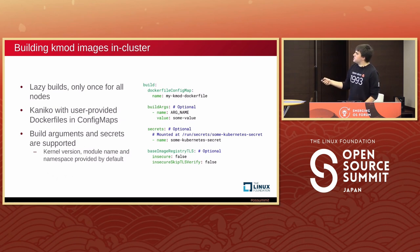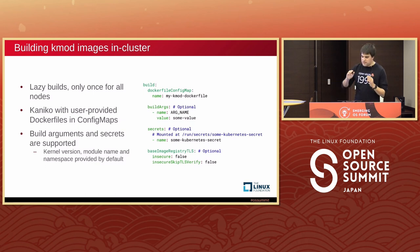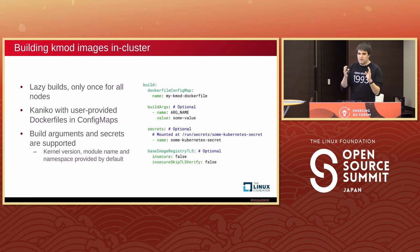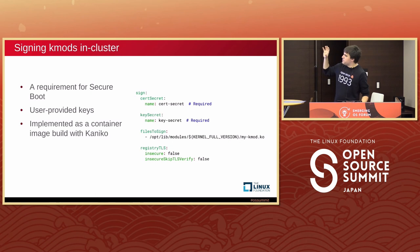Here is what the build section of a Module resource looks like. This build configuration can be configured for some kernels only or for all kernels. It references a Dockerfile that the user provides. The operator looks at all kernels available in the cluster, and for each kernel where the corresponding image doesn't exist, it uses that Dockerfile to create a pod that builds the kmod image with all the kmods inside, which is then deployed to all nodes that need it.